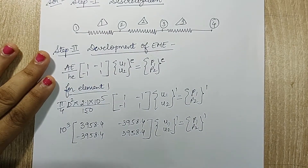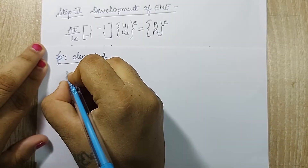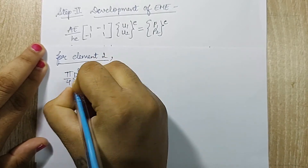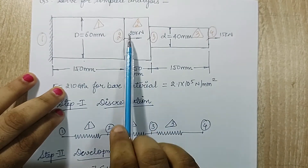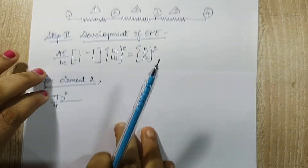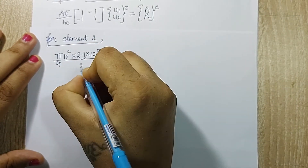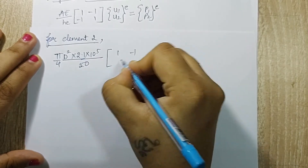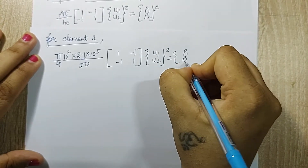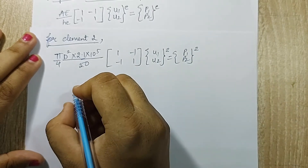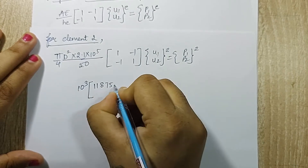Element 1 is between node 1 and 2. Next I will go for element 2. Area will be (π/4)D² again — in this question the diameter is the same; only because of the sudden loading I have marked a different element. So I use the same (π/4)D² × E = 2.1 × 10⁵ and length is 50. On solving this I get 10³ outside and the multiplier inside is 11875.08.